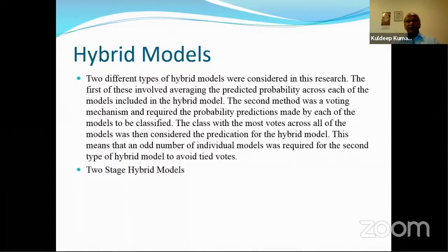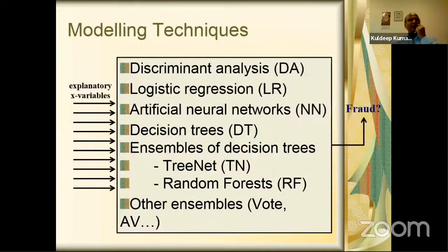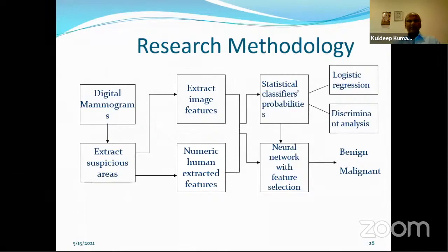Another approach suggested by Matri Darkis: first use all models, then find the average of their predicted probabilities, since some models have drawbacks individually. The second method is a voting mechanism — if four out of six methods say the cancer is malignant, you classify it as malignant. A two-stage hybrid model uses the statistical model first, then uses machine learning for the cases that are misclassified. We used this in fraud detection combining discriminant analysis, logistic regression, neural network, decision trees, and other ensemble methods.